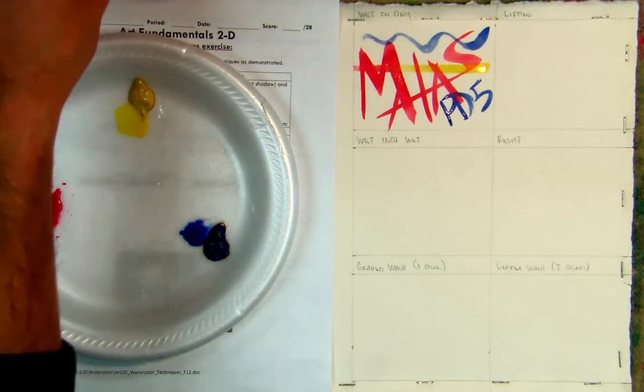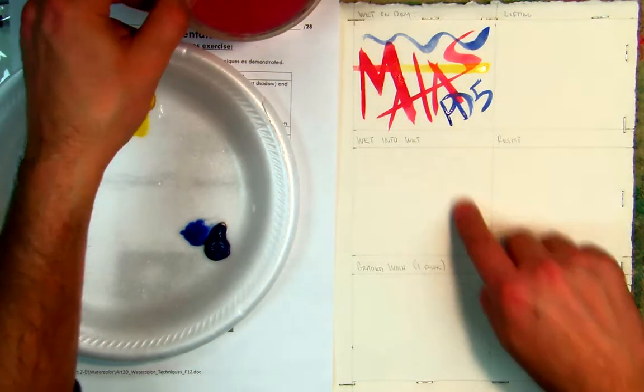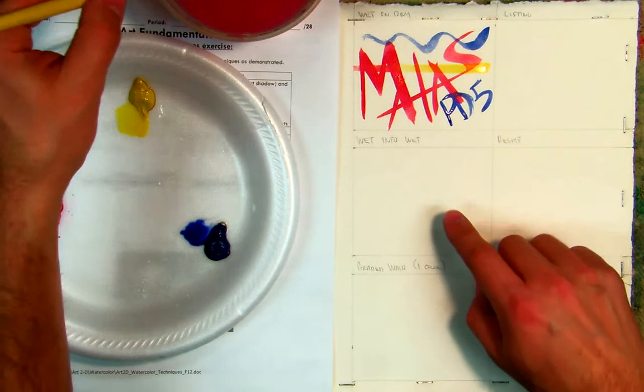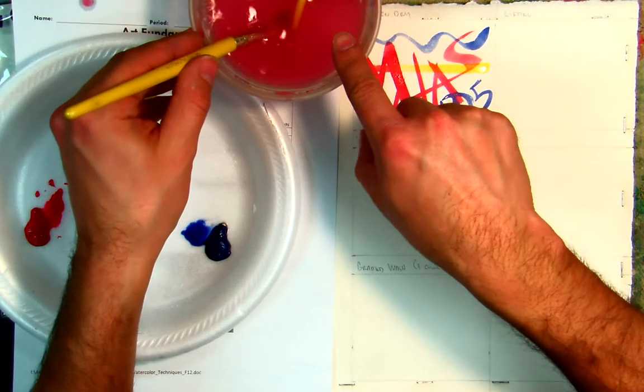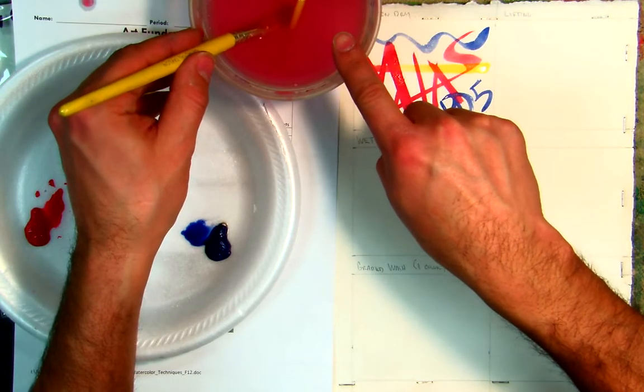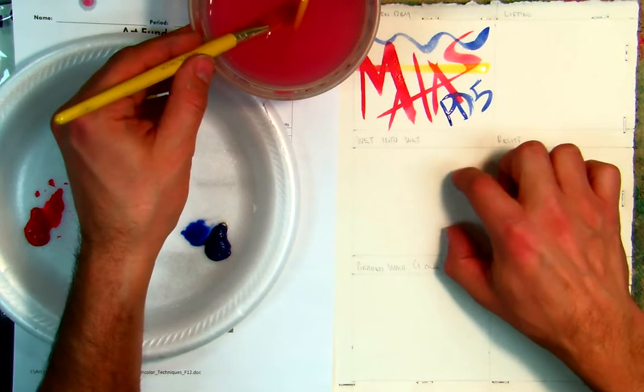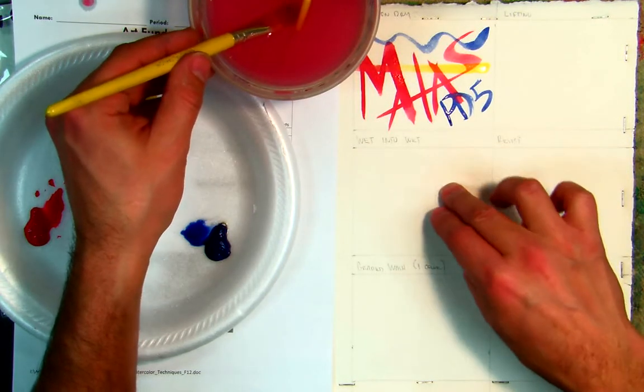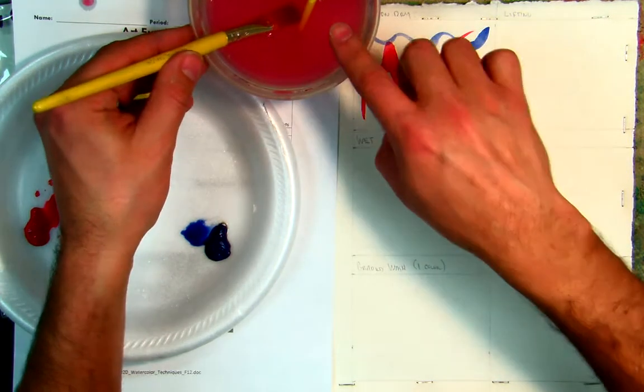So the first thing I do is I'm going to actually wet this entire area with my brush. Now, you'll notice that my water has changed pink. That means that's actually going to transfer a little bit onto this paper. So if I want this to stay white, I need to go and clean off my water.